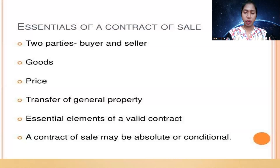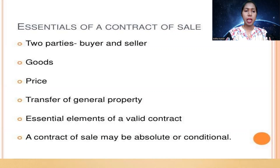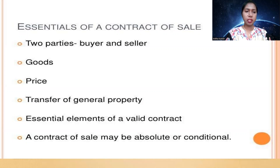These are the essential elements of a contract of sale. There are two parties in the Sale of Goods Act — buyer and seller. The seller exchanges the goods and the buyer pays money for it. There are three specific types of goods: existing goods, future goods, and contingent goods. Existing goods are those which are ready to transfer — for example, if you go to a grocery shop and the goods are available, you pay money and receive them immediately.